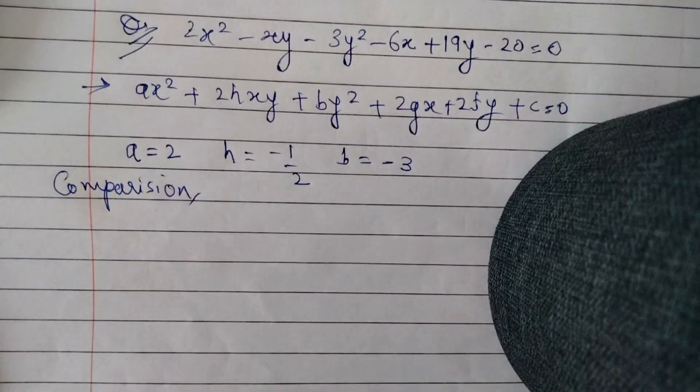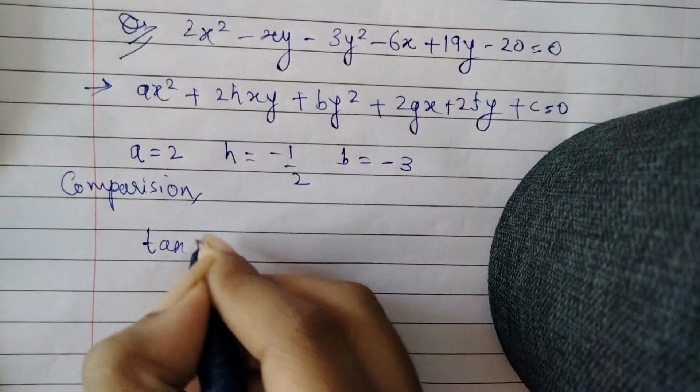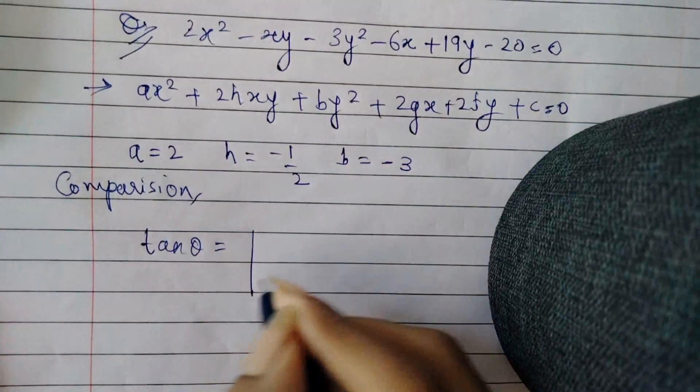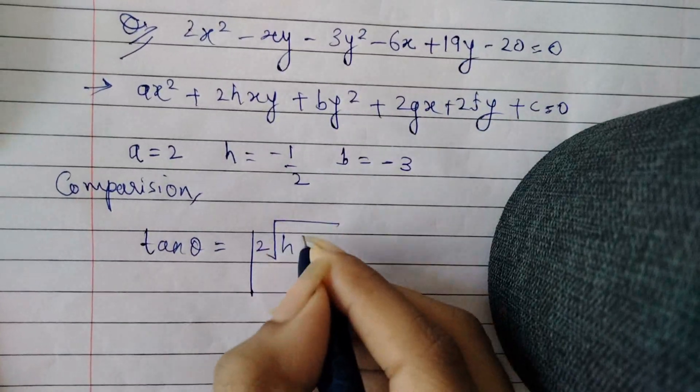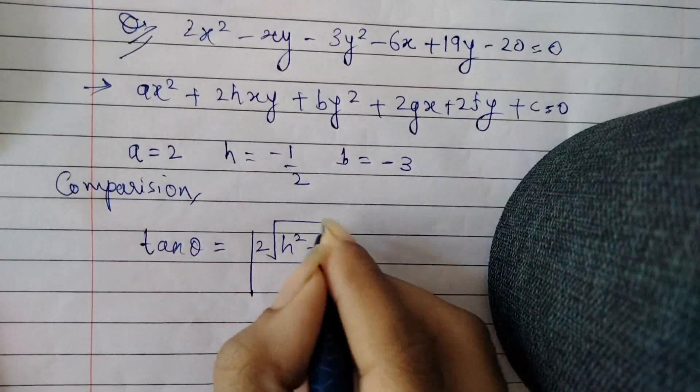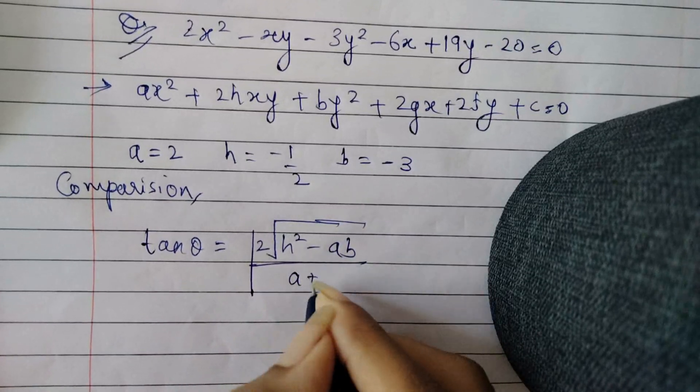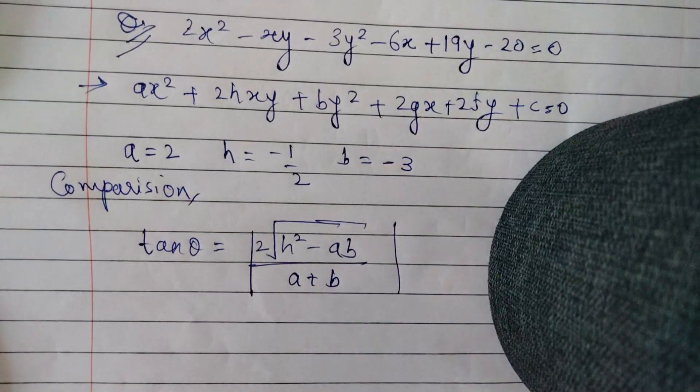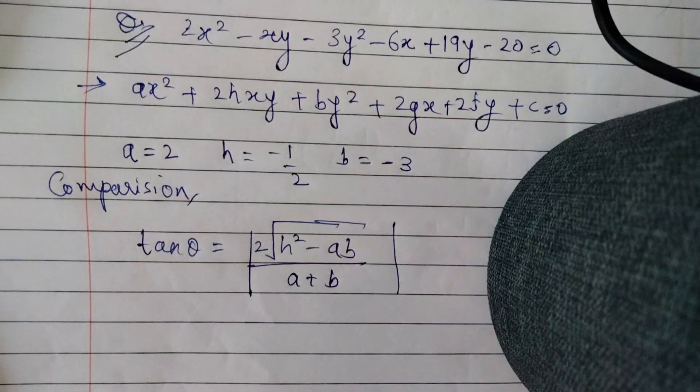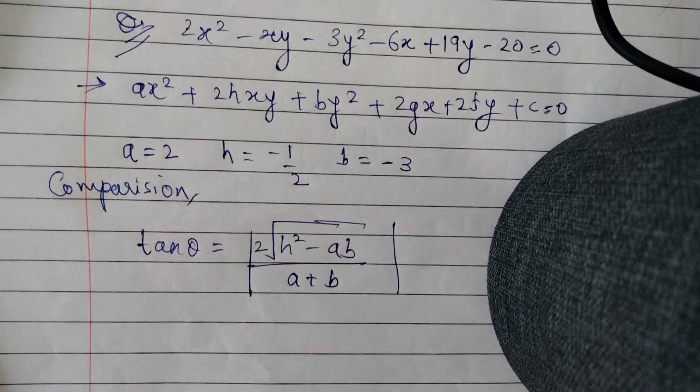The formula used here is tan θ = |2√(h² - ab)/(a + b)|. This is the formula used to find the angle between a pair of straight lines.